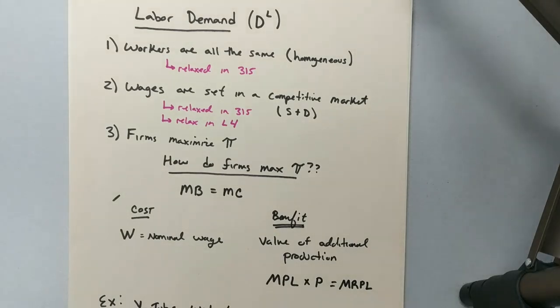As a little bit of a review, we're talking about the labor demand. And we have a couple of assumptions here that we had in our notes: that workers are all the same, wages are set in a competitive market, and that firms maximize profits, which led us into the question of how do firms maximize profits?